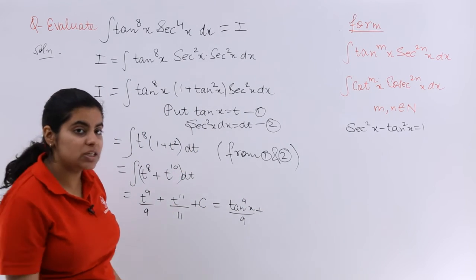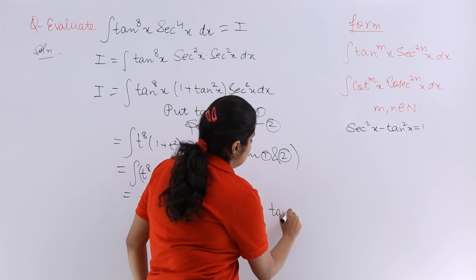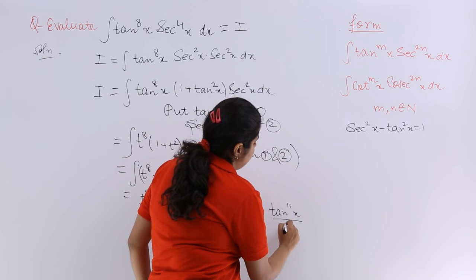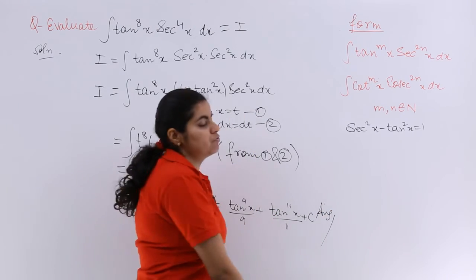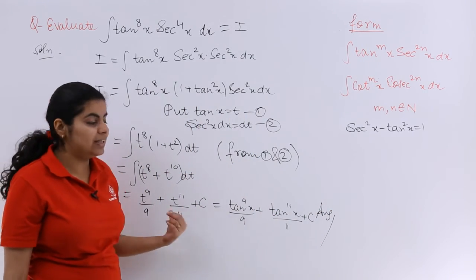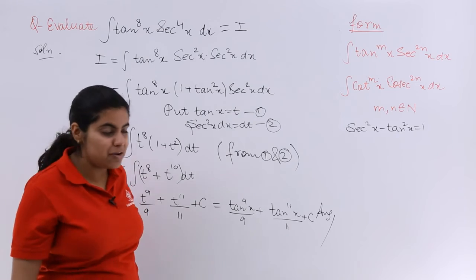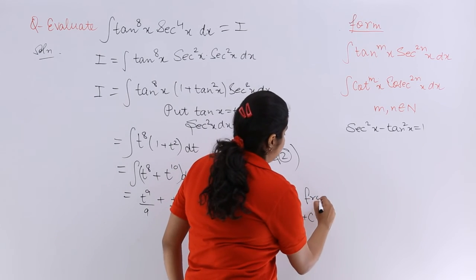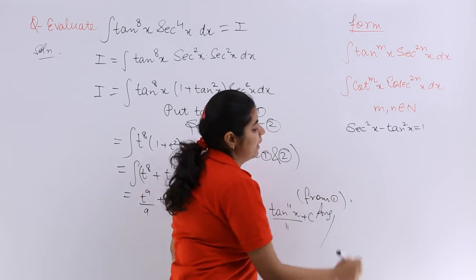Similarly, I have raised to the power 11, so it is tan x raised to the power 11 upon 11 plus the constant of integration which is c. And from where I have done this all substitution? Again from my equation number 1. So I have to write I have done this from my equation number 1.